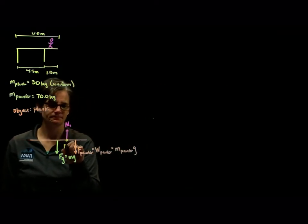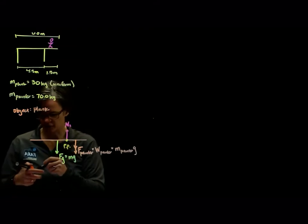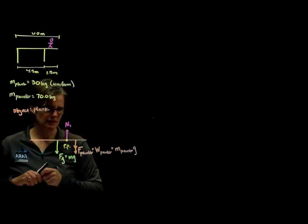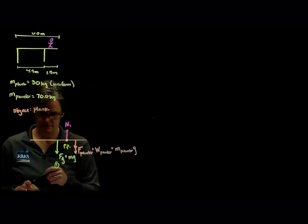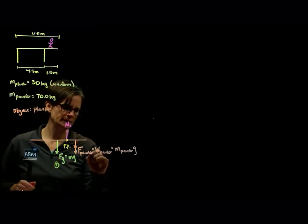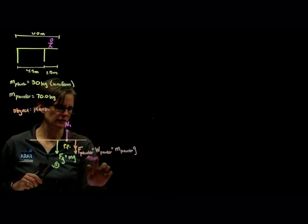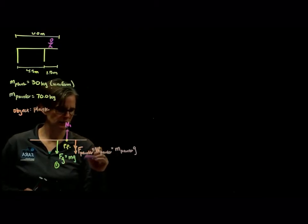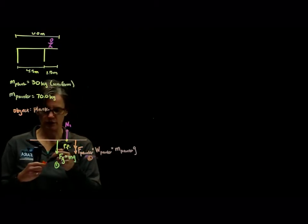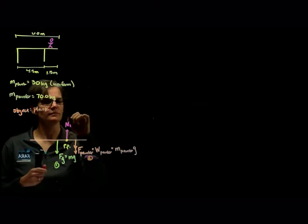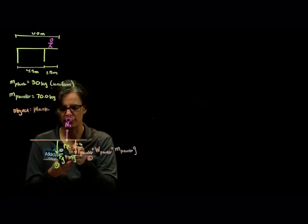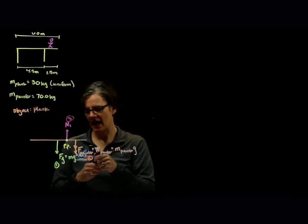If this is our pivot point, we then are going to identify each of the forces. So one, two, and three. There are only three forces acting on the board. And we will look at the net torque.